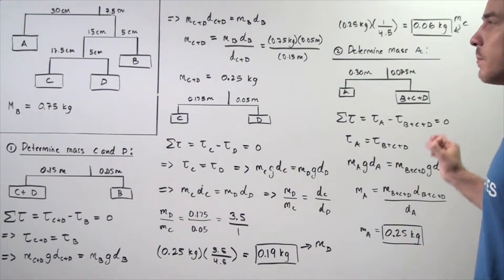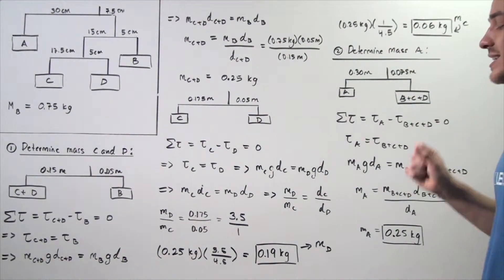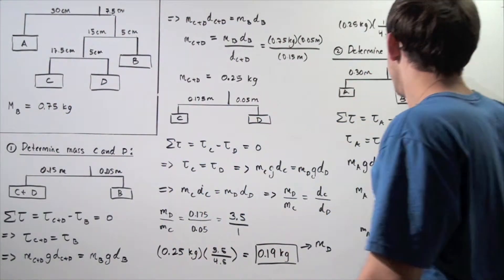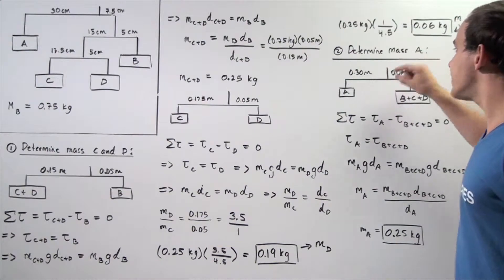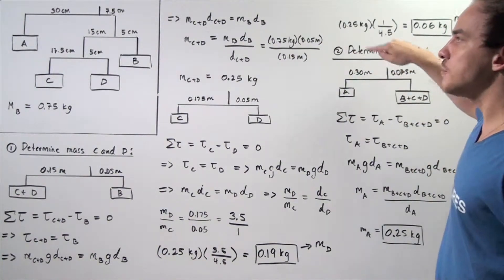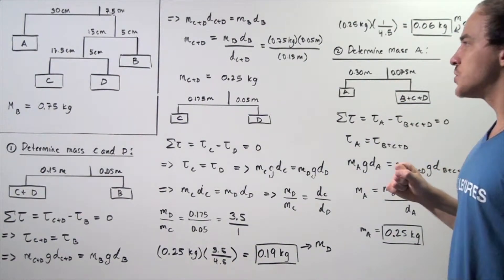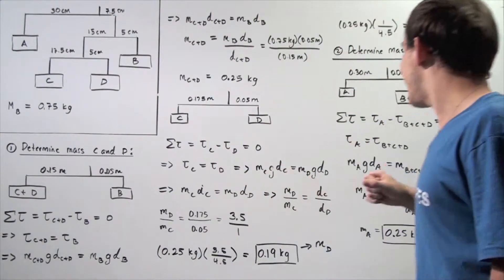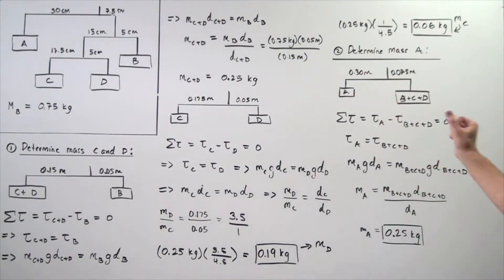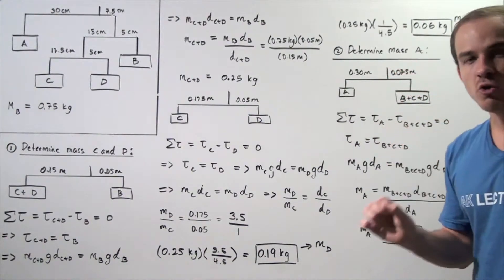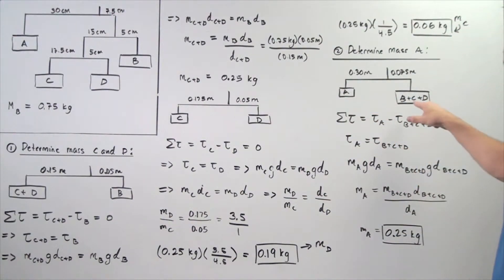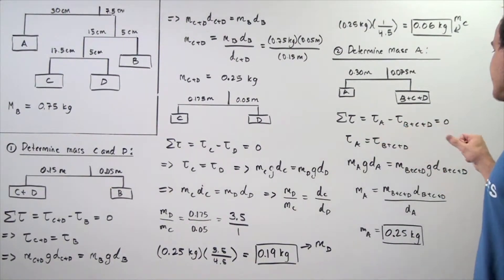Now let's find the mass of object A. We examine beam one as a whole. The massless cord acts as the axis of rotation. The distance from the axis of rotation to where object A hangs is 0.3 meters, and the distance from the axis to where masses B, C, and D all hang is 0.075 meters. Assuming static equilibrium, the net torque on the beam is zero. Torque from A is positive, and the torque from the combined mass of B, C, and D is negative. Taking the sum and equating to zero, we rearrange to get torque A equals torque B+C+D.